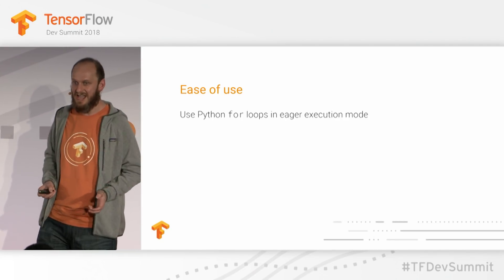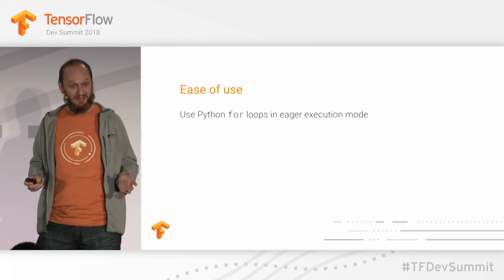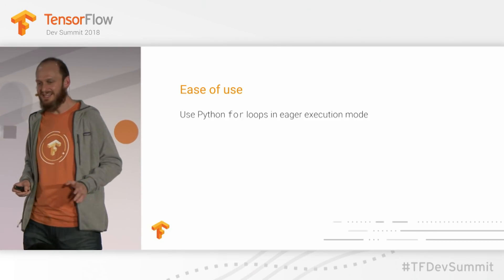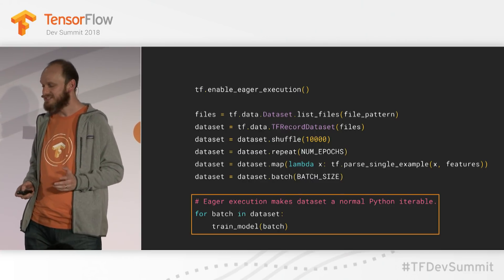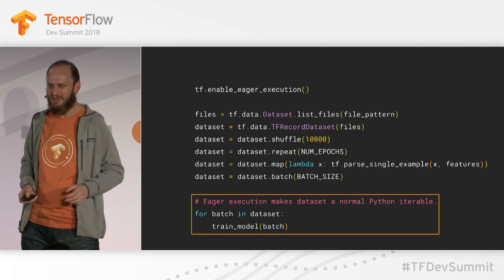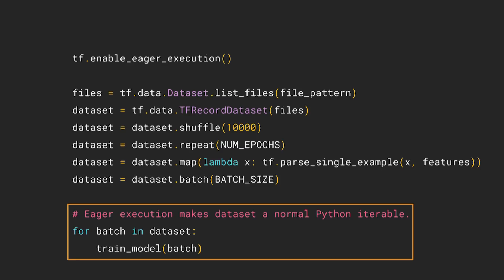So I just want to share a few highlights from recent months. First off, as Rajat told you in the keynote, eager execution is here, and it makes using TF data a lot more pleasant. In the next talk, Alex is going to tell you a lot more about eager mode. But from my admittedly biased perspective, the best thing about it is that you can start treating datasets just like any other iterable object in Python. So you can simply loop over them with a regular for loop — no more make_one_shot_iterator required. And what's really neat is that it works together with TF data optimizations like GPU prefetching, so you can combine the efficiency of asynchronous graph-based execution for your input pipeline with the flexibility of eager execution for your model code.